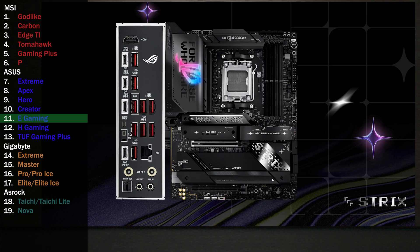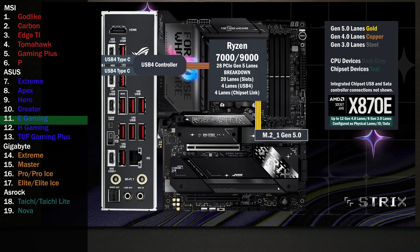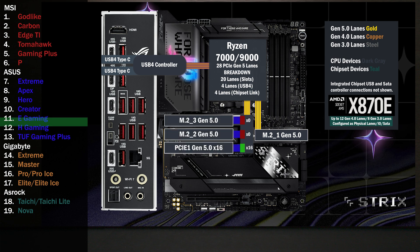Here's the Strix X870E eGaming. The first four lanes go to a USB 4 controller, connecting two Type-C ports on the back. Four lanes go to the main M.2 slot at Gen 5. Sixteen lanes go to a PCIe switch connecting a x16 slot and two M.2 slots. If only the x16 is used, all lanes go to that slot. If either of the M.2 slots are used, the x16 drops to eight lanes and four lanes go to each M.2.